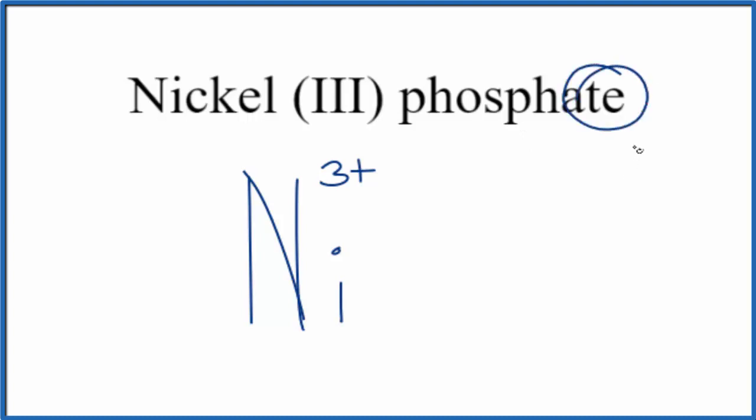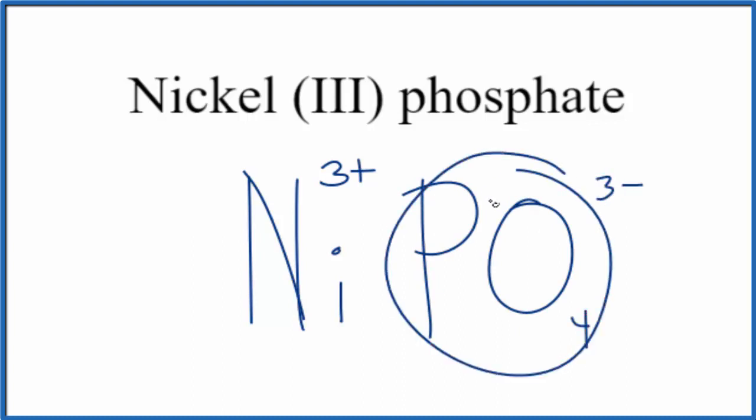Phosphate, when you see this -ate, you're not going to find that on the periodic table. So you either memorize that the phosphate ion, it's a polyatomic ion, is PO4 3-, and that 3- is on the whole PO4 here. Or, if you're allowed, you can look it up on a table of polyatomic ions.